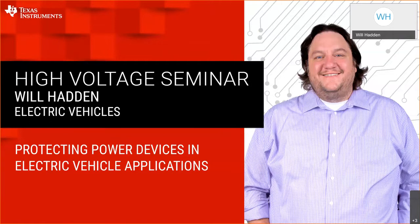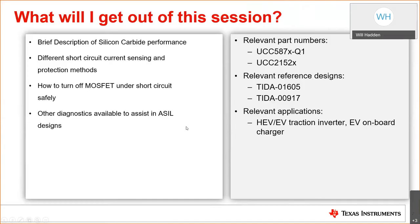Thank you, Kang Yao. I'm going to be talking about the protection of power devices. Initially, I'll go through a brief description of silicon carbide performance and why we see the traction space moving in that direction, and what that means for the protection feature requirements. The big protection feature, of course, is overcurrent sensing, and we'll go through several different methods and versions of protecting against overcurrent cases, and how to turn off the external FET based on those cases and the tradeoffs involved.